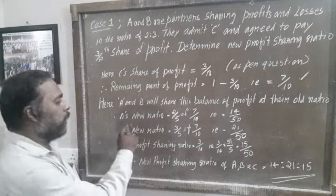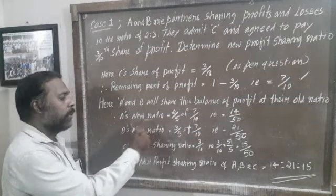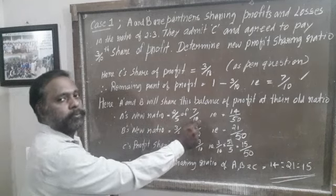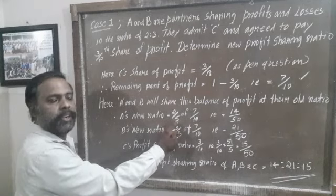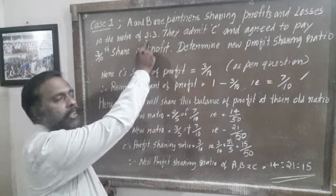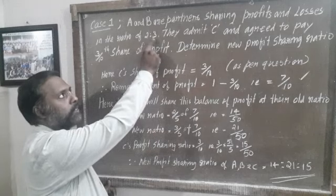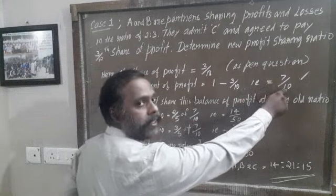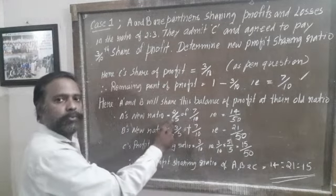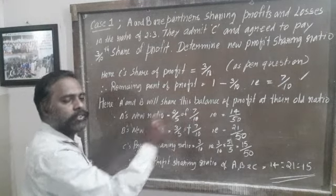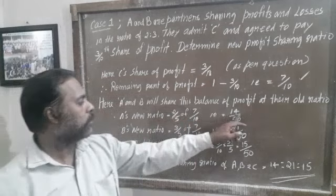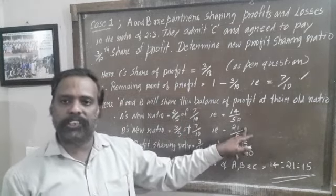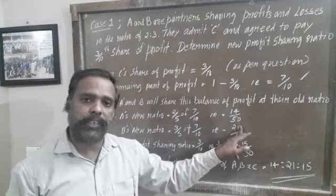What is the new ratio for A? A's new ratio is equal to 2/5 of 7/10. The 2/5 comes from A's old profit sharing ratio, since 2 divided by (2+3) equals 2/5. So 2/5 multiplied by 7/10 gives 14/50. A's new profit sharing ratio is 14/50.